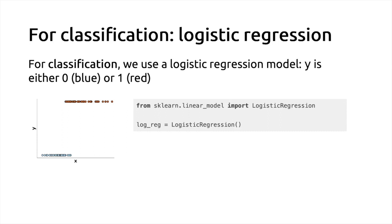For classification, the canonical method is called logistic regression. Consider a problem where the target variable y is either 0 or 1 — two integers encoding two classes such as blue and red. Since y can only be 0 or 1 — not something in between — you import the LogisticRegression class from scikit-learn's linear_model package, instantiate it, and fit it on the data.